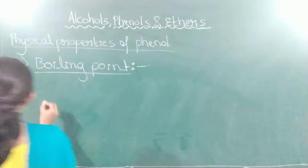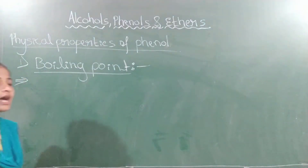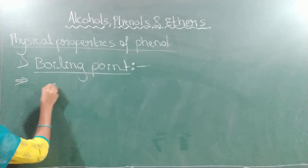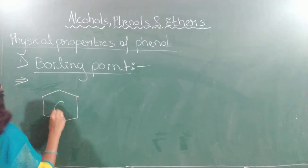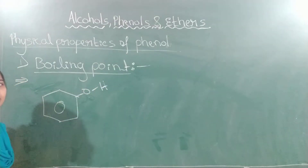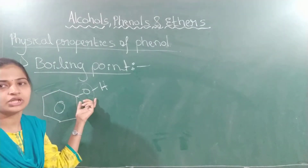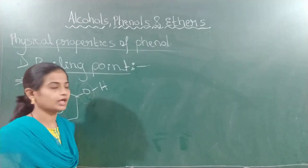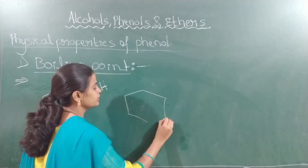What is the reason for that? The reason for the higher boiling point is intermolecular hydrogen bonding. This is the structure of the phenol. Due to the highly electronegative oxygen atom, this hydrogen is able to form intermolecular hydrogen bonding with another molecule of phenol.